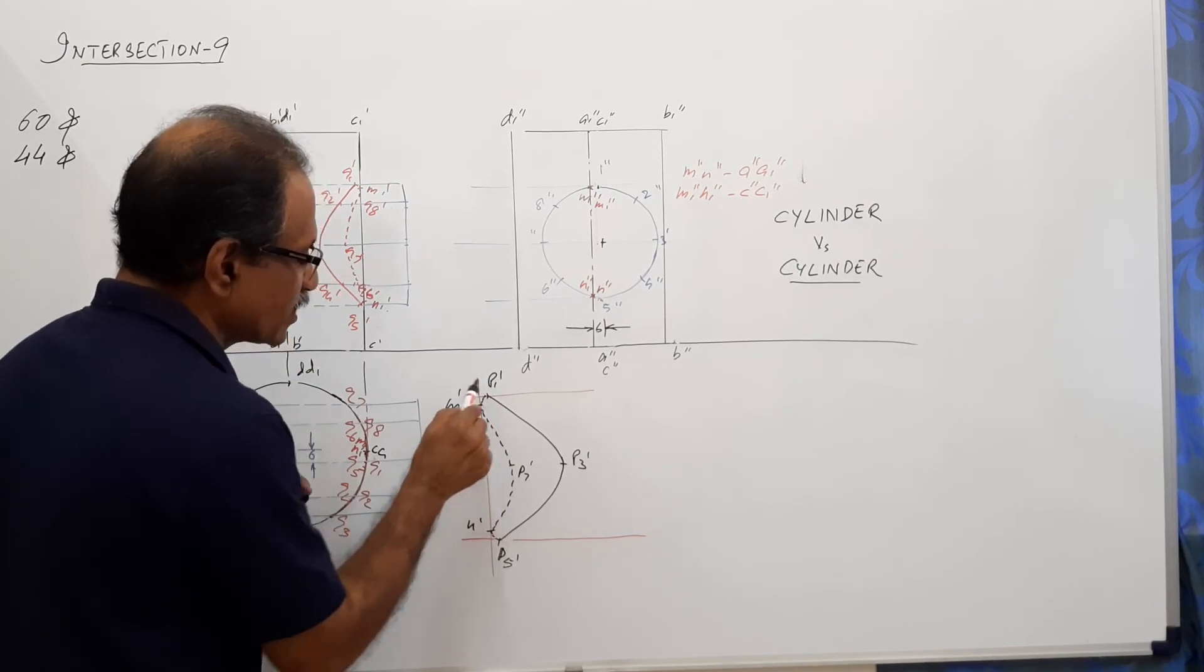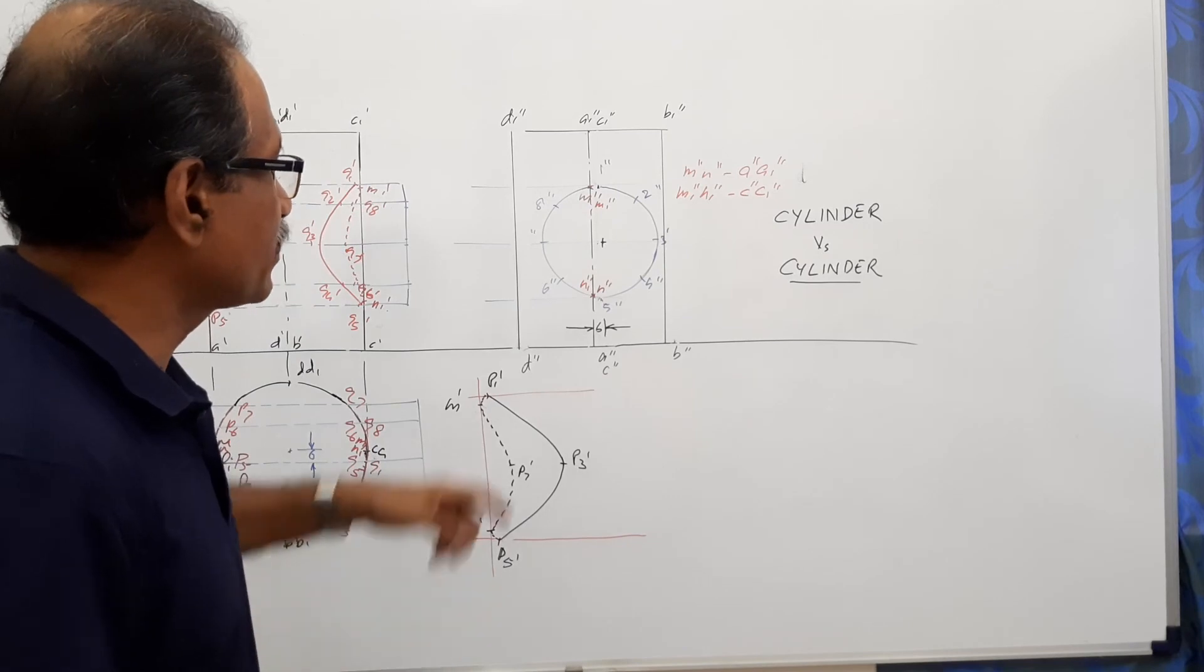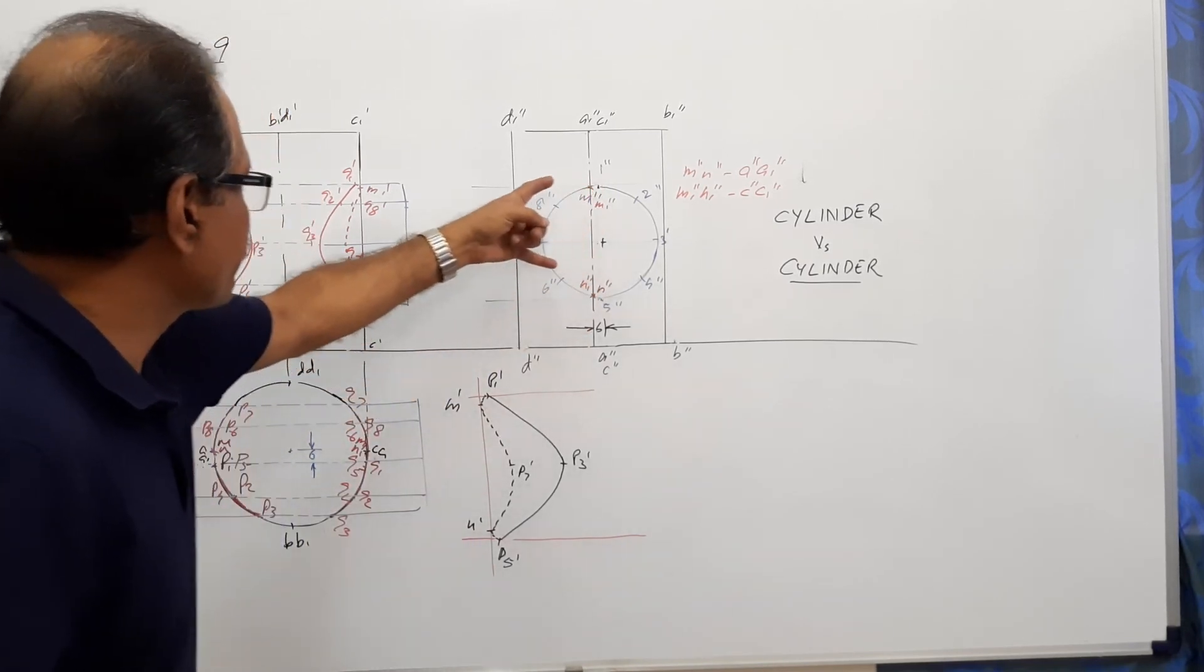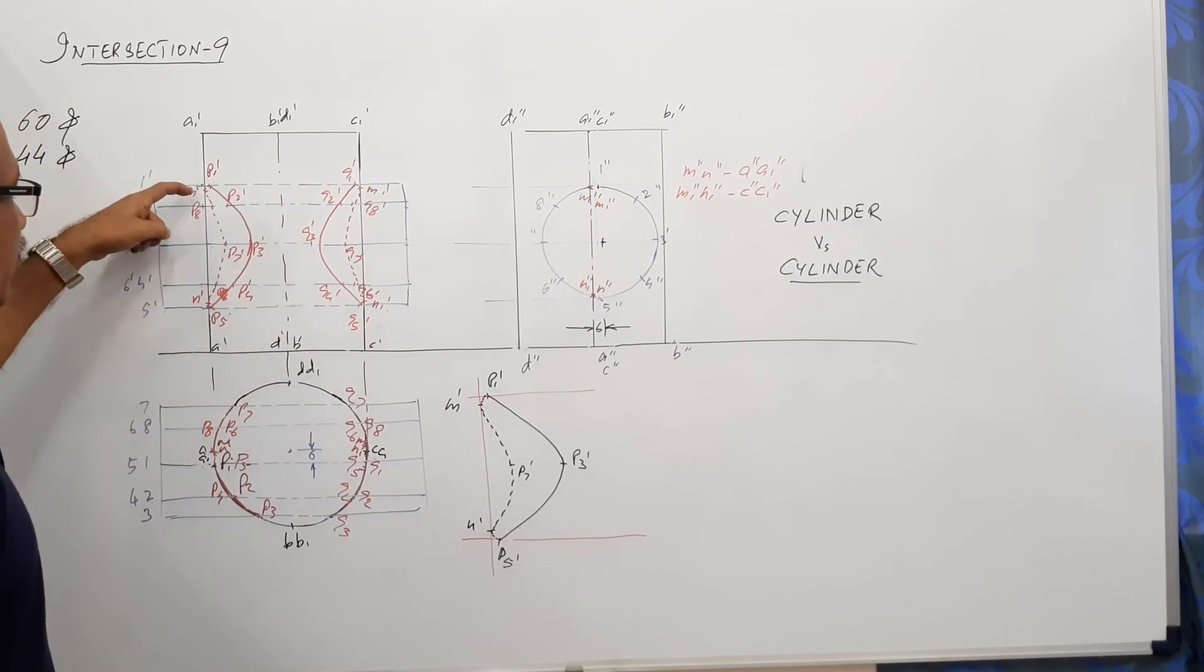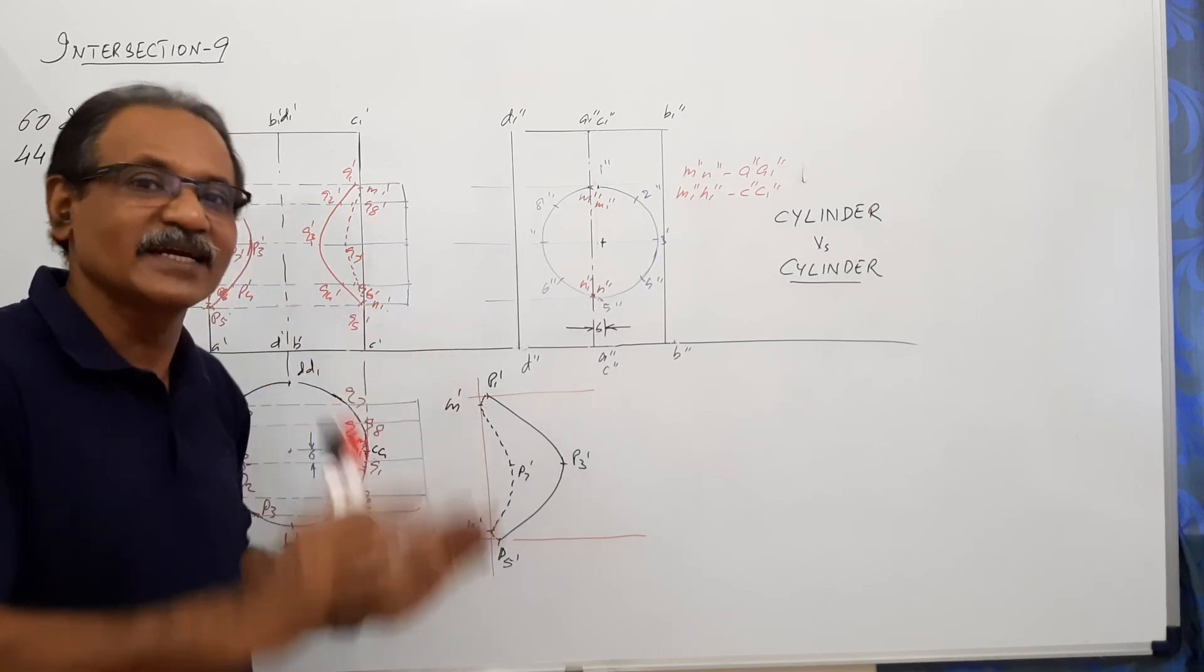This is an enlarged view. In an examination when an examiner is evaluating your answer script he will check whether these two points are marked and he will check whether those horizontal lines are marked to get these four additional points. You have to be extremely careful and show it very clearly.